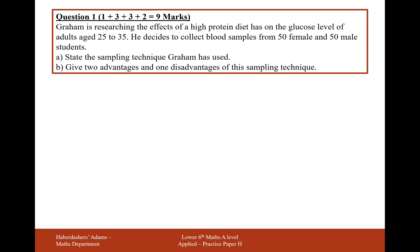Graham is researching the effects a high protein diet has on glucose levels in adults from 25 to 35. He decides to collect random blood samples of 50 female and 50 male students. State the sampling technique Graham has used.